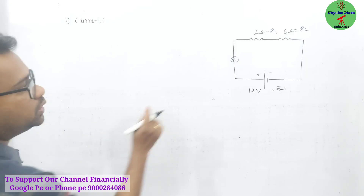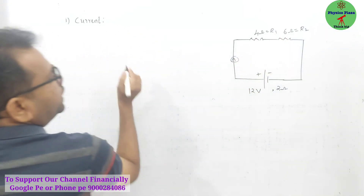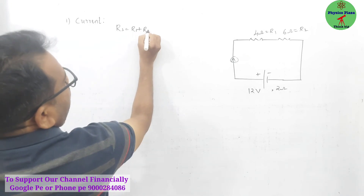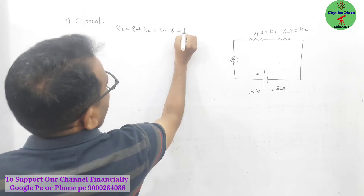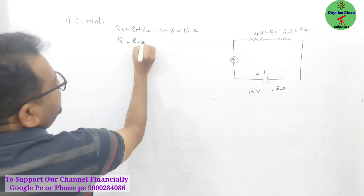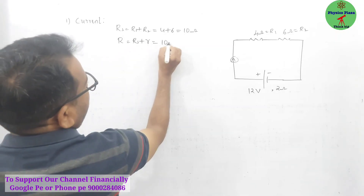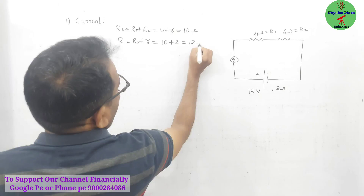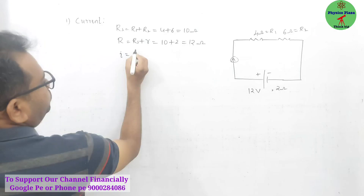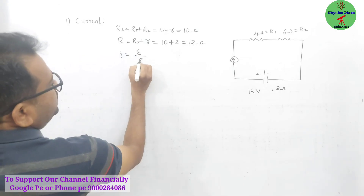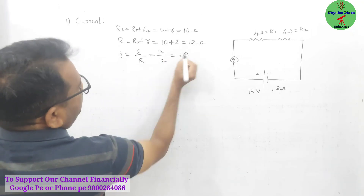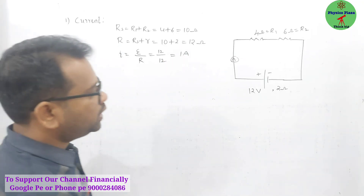Since the resistors are in series: Rs = r1 + r2 = 4 + 6 = 10 ohm. Total resistance = Rs + internal resistance = 10 + 2 = 12 ohm. Current = EMF / total resistance = 12 / 12 = 1 ampere.